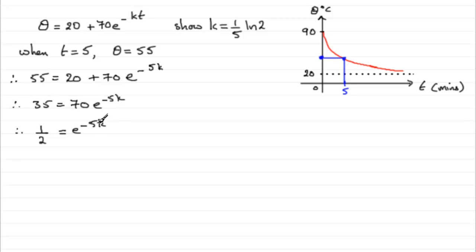Now to work towards getting k, what I'm going to do is take natural logs of both sides. So we've got the natural log then of a half equals the natural log of e to the minus 5k, e to the power minus 5k. And with this I can use the power rule for logs. Remember if you've got a power here we can bring this out to the front. So we've got the natural log of a half equals minus 5k multiplied by the natural log of e.